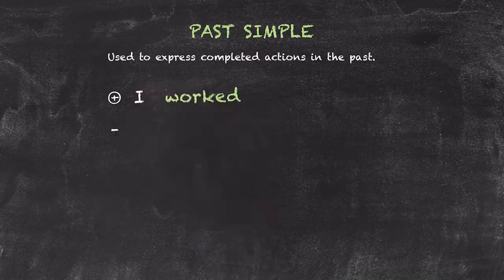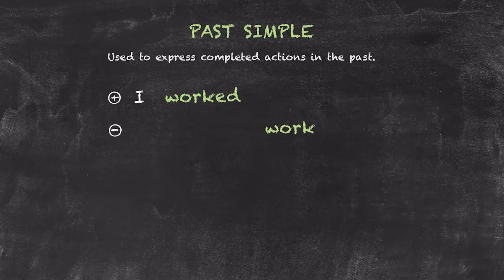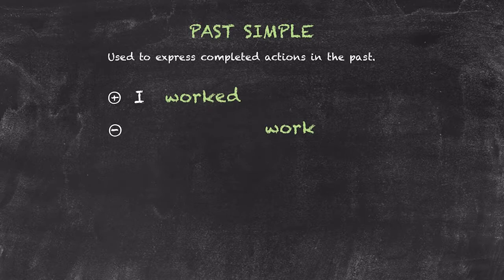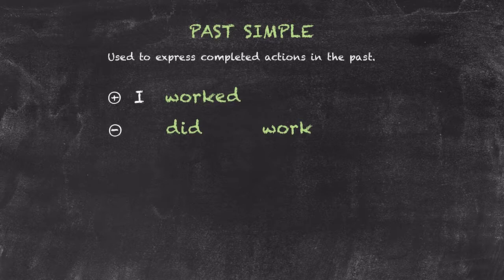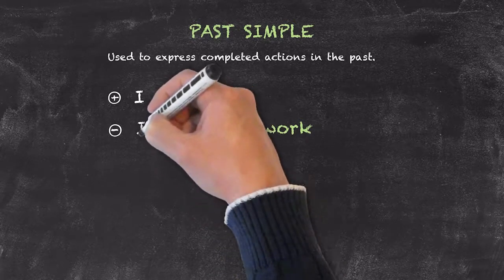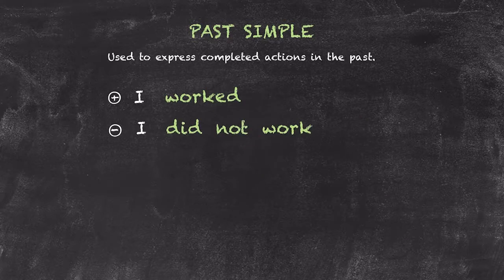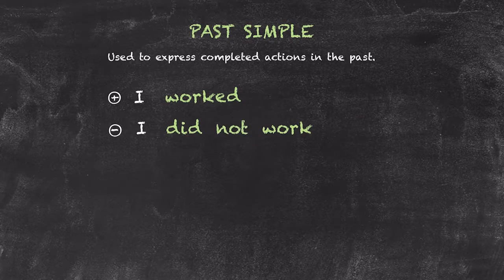For the negative sentences, rather than changing the verb, we add the auxiliary verb. In this case, the auxiliary verb is do. So I've changed do to did, to indicate the past, and it results in a sentence structure such as, I did not work. Now did not is the full form. Obviously, we can contract this into didn't.